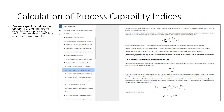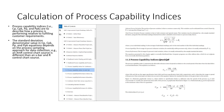Why process capability indices? What they're meant to do is describe how a process is performing relative to fulfilling customer requirements. The standard deviation denominator value in these indices equations depends upon the process sampling approach. People often don't discuss this, but it's a big deal. For example, from the same process, if we were to examine the process using an XMR control chart and use that data source to calculate process capability, it can be quite different than an X-bar and R chart from the same process.